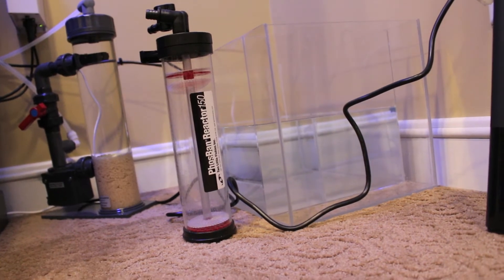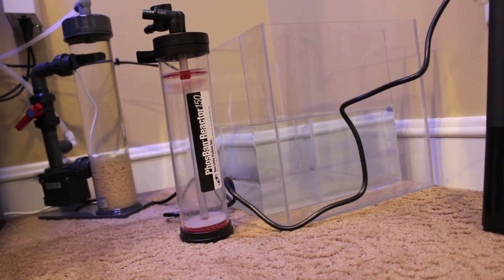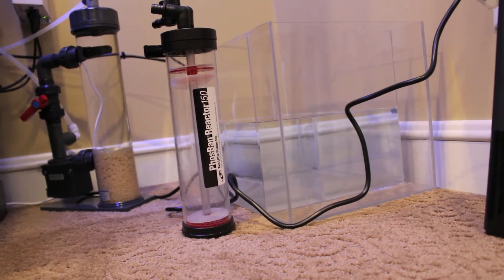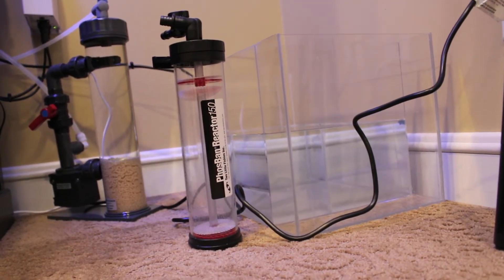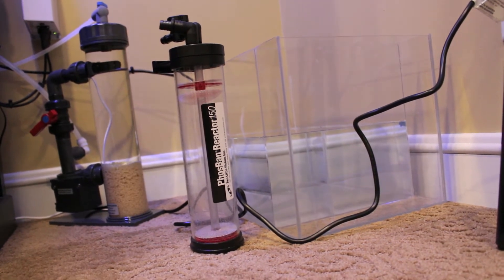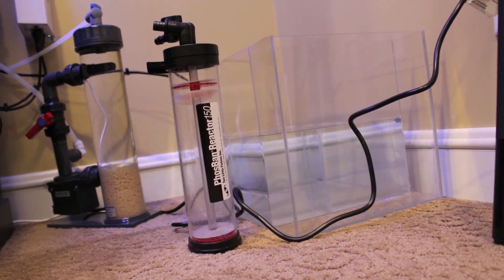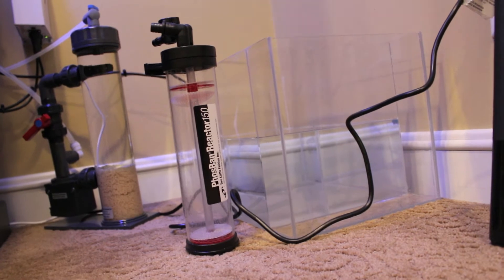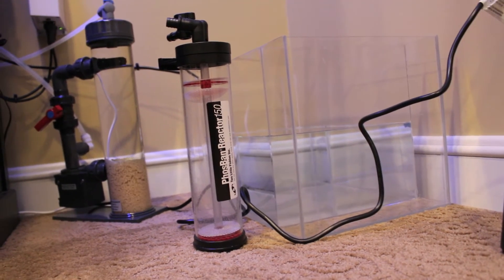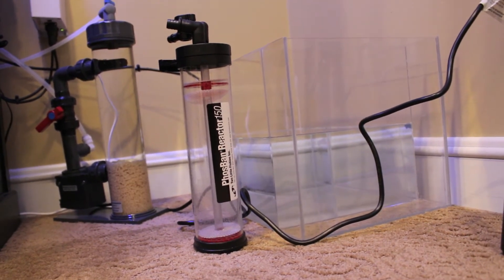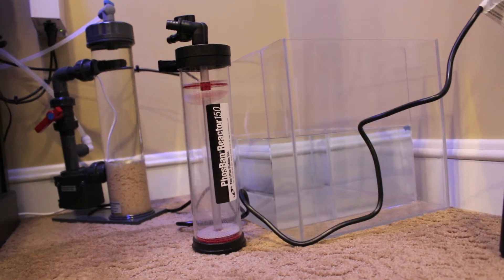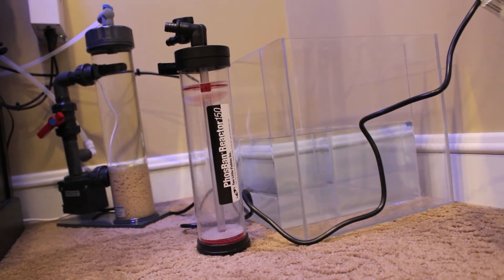...you should see your skimmer pick up in not only the skimmate that it's producing, but also the smell of the skimmate is a real good key that the bacteria is starting to be present in your tank. Then add another 20% and continue to do that month by month by month until you get to a full level of what's recommended for your particular size of your tank.